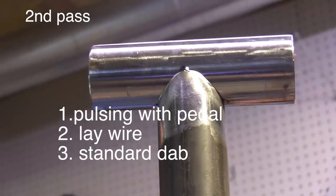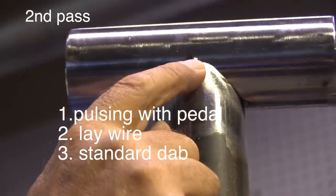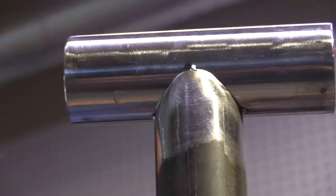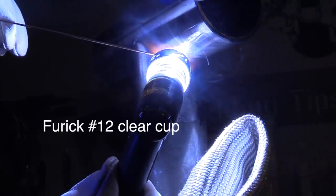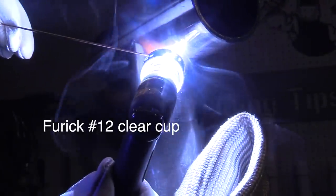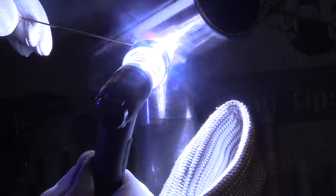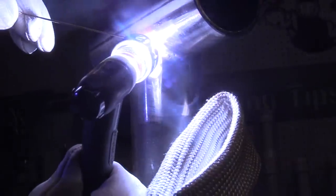For the first pass I'm going to be at roughly 110 to 120 amps using this Furic number 12 clear cup just because I can run a longer stick out, much easier to film, but it works great for something like this as well. A little later on I'll swap off to the ceramic version of this.